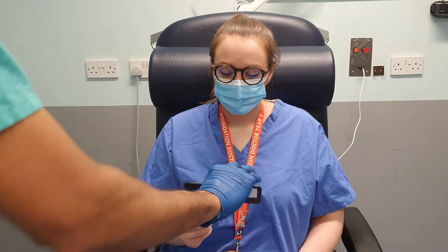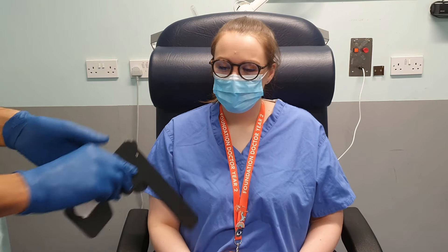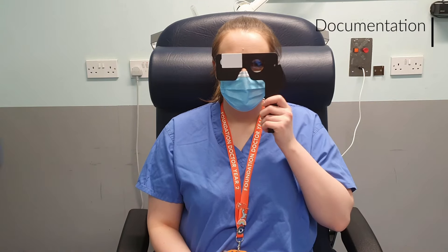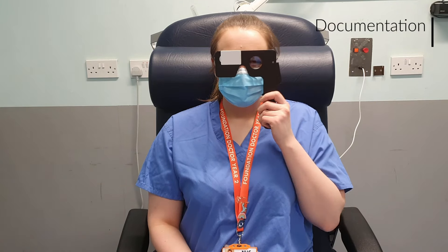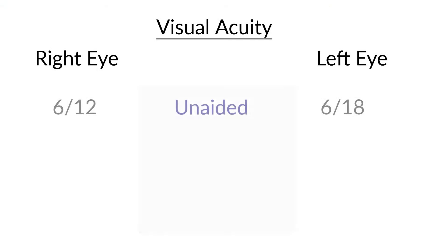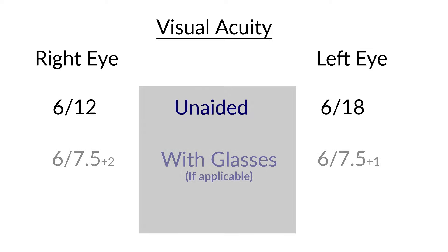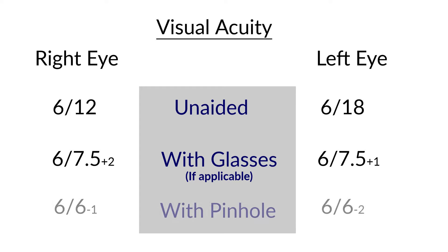Then repeat the process for the other eye. For each eye you should document the visual acuity unaided, the visual acuity with a distance glasses prescription or contact lenses, and finally their visual acuity with a pinhole.